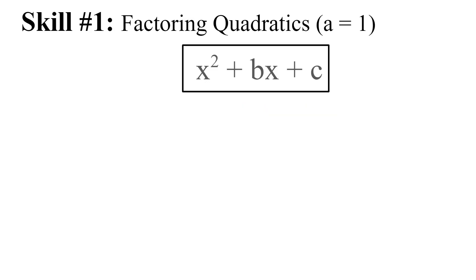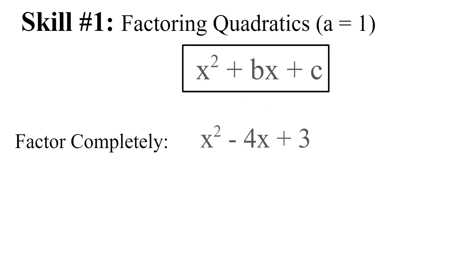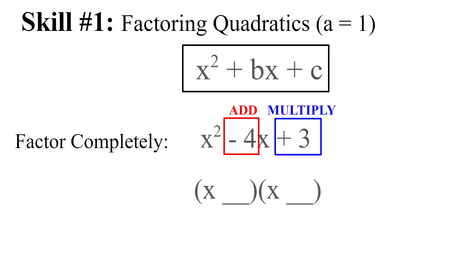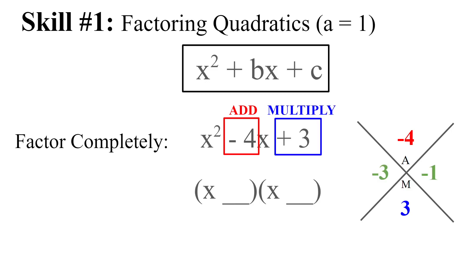Let's do a couple more. We want two numbers that add to negative 4 and multiply to 3. Remember to always include the sign. The only way to get 3 is 1 times 3, so the numbers must be negative 1 and negative 3. Putting those into our parentheses gives x minus 3 times x minus 1.